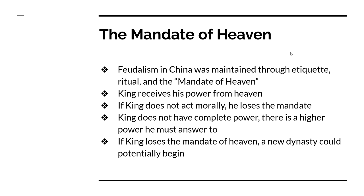Another part of feudalism that develops in the Western Zhou dynasty is the idea of the Mandate of Heaven. This is a way for the king to maintain control of the people. The king receives his power from heaven, from the deity above, and as long as the king does what he's supposed to do, the king will have the Mandate of Heaven — the right to rule. But if the king does not act correctly, if he does not act morally or take care of his people, he loses the mandate and his dynasty could be replaced by another.